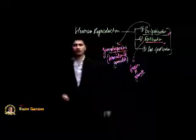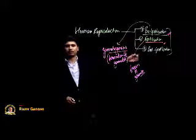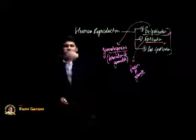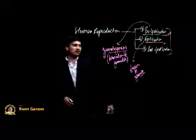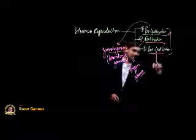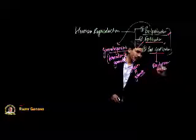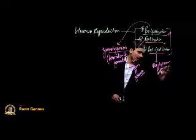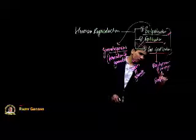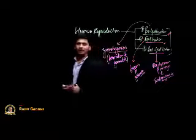Once gametes fuse, a new cell is produced called the zygote. This zygote develops into an embryo, and the embryo gives rise to a newly born baby. In the post-fertilization phase, development of the embryo takes place, and this process is called embryogenesis. Now we will start with each phase one by one.